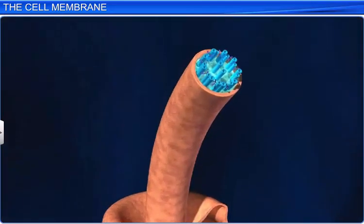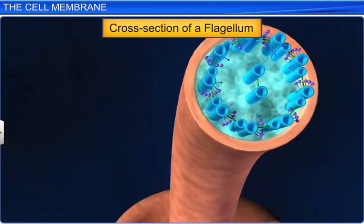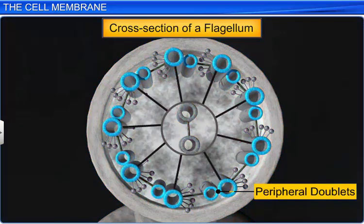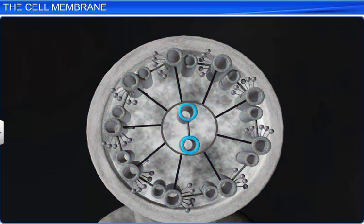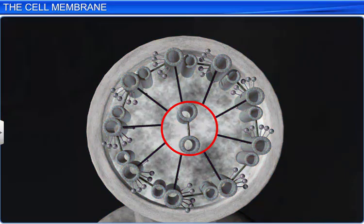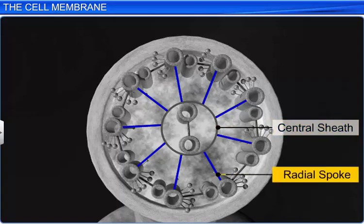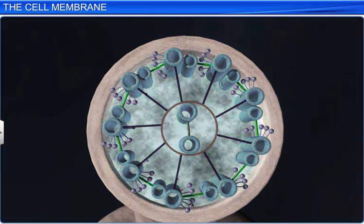Two microtubules join to form a doublet. If we observe a cross-section of the axoneme, we will see nine pairs of radially arranged peripheral doublets and a pair of centrally located microtubules which are interconnected by a bridge. Such an arrangement of axonemal microtubules is known as the 9 plus 2 array. The central microtubules are enclosed by a central sheath which is connected to one of the microtubules of each peripheral doublet by a radial spoke. The peripheral doublets too are interconnected by linkers called an interdoublet bridge.